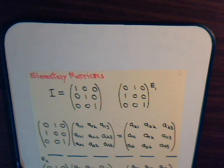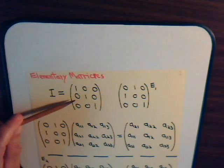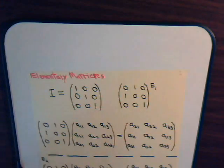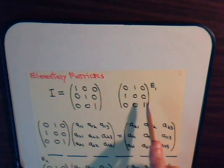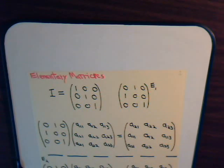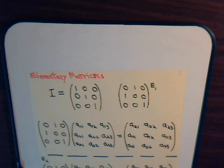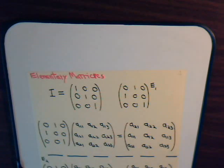There are three different types of elementary matrices. The first type is obtained by exchanging two of the rows in the identity matrix. Here we exchange the first row and the second row, but we could have exchanged the second and third row, or the first and third row. Either way produces an elementary matrix of type 1, where we did a row exchange on the identity matrix.